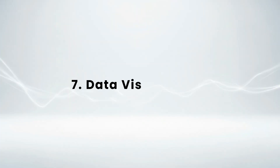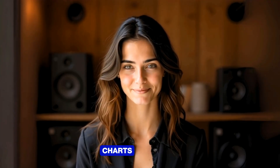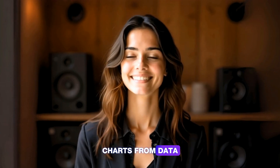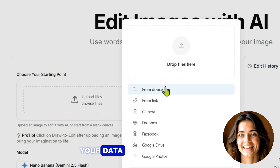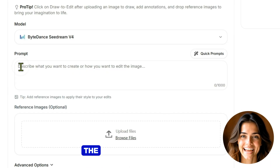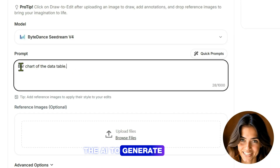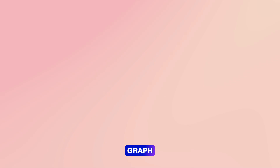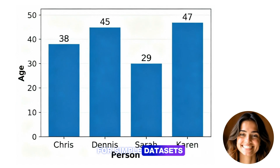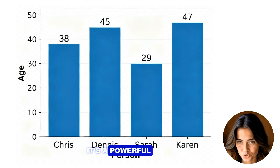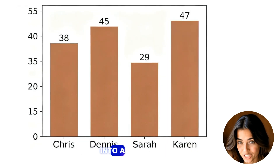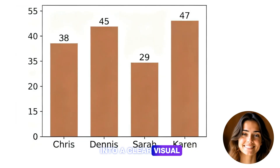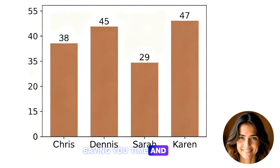Number 7: Data visualization. Tired of manually building charts from data? Simply upload an image of your data table and prompt the AI to generate a clean graph. While currently optimized for simple datasets, it's a powerful shortcut to transform your numbers into a clear visual, saving you time and effort.